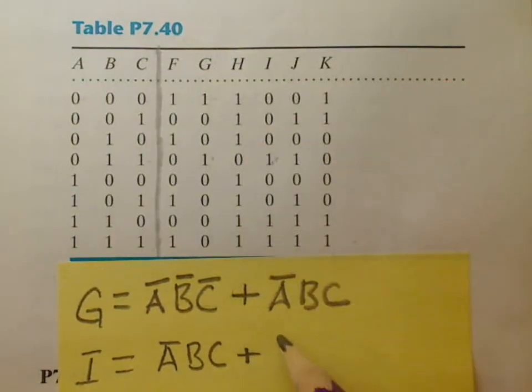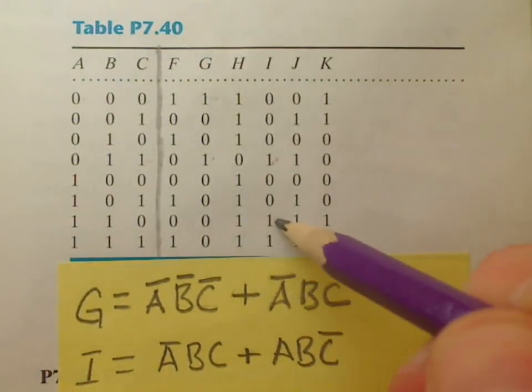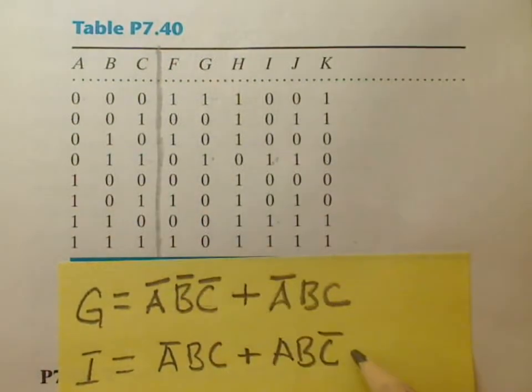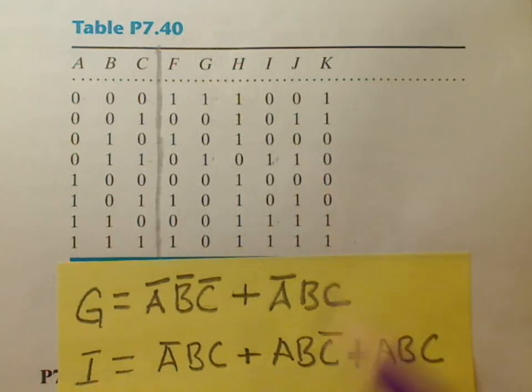or if A, B, and not C are on as we see here, or if A, B, and C are all on. So we have one term for every 1 that we have in the column.